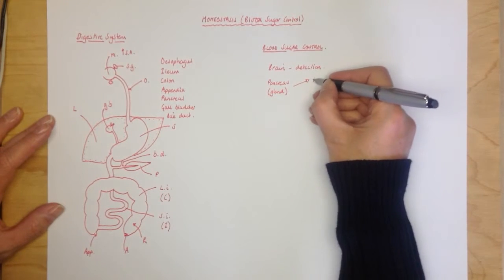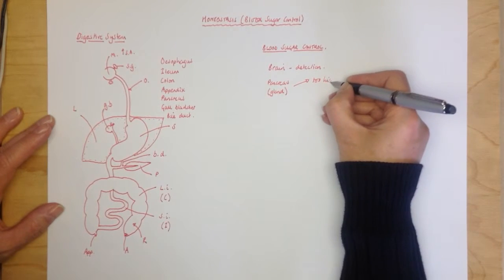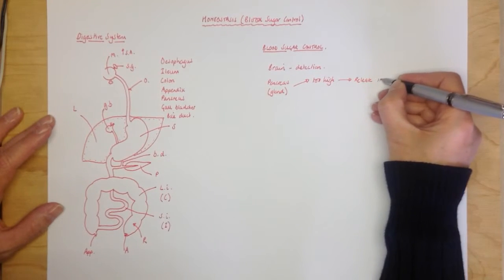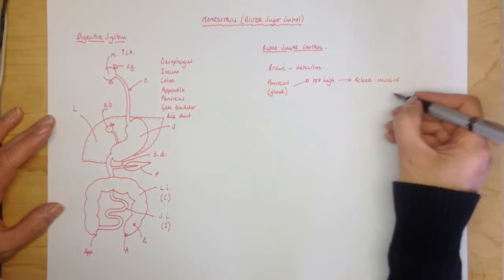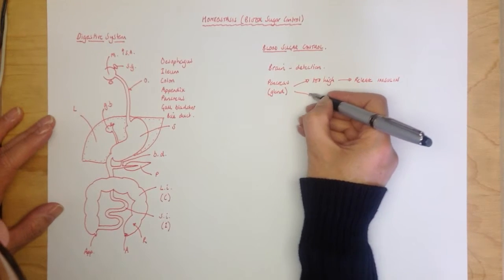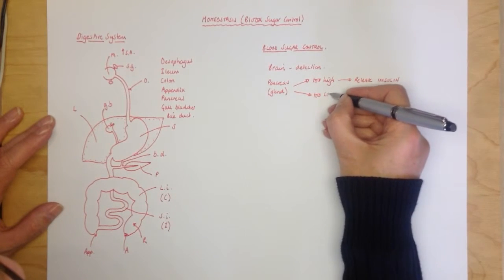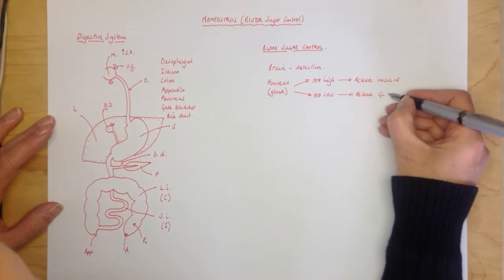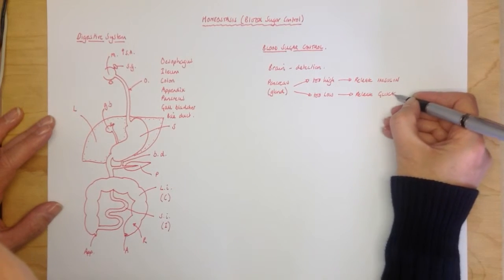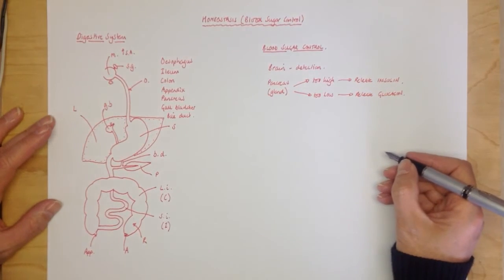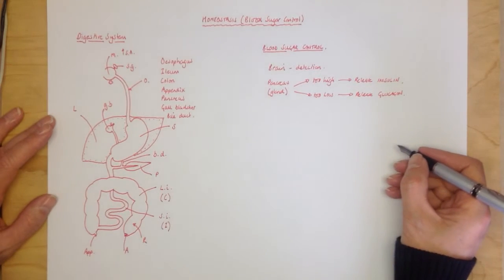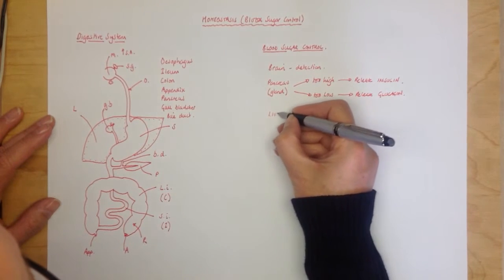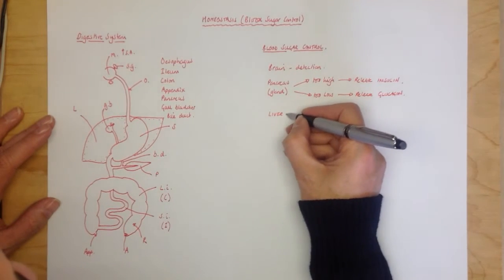Now if your blood sugar levels are too high, the pancreas will release insulin, which will go to the liver. And both of those hormones, as all hormones, are transported through the blood.